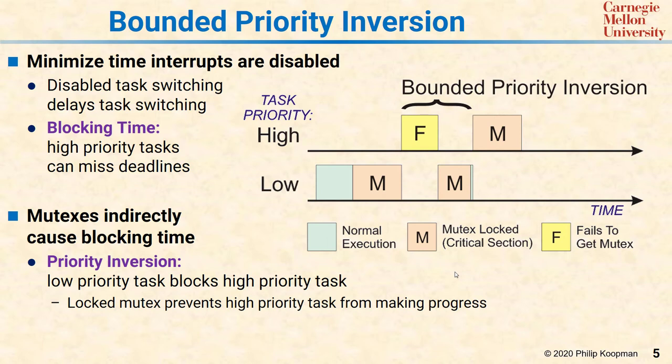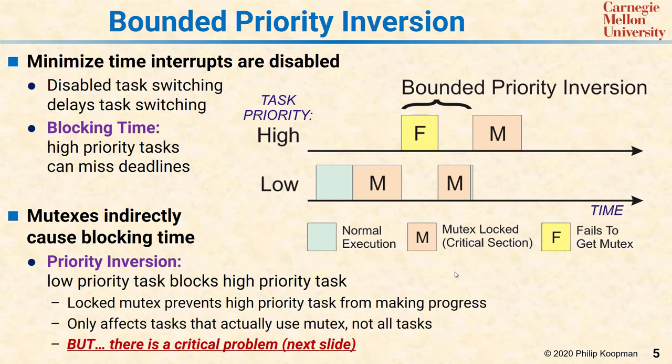As long as you can guarantee the maximum length of time the low priority task needs the mutex, you know the high priority task will never be delayed more than that. This particular type of priority inversion only involves tasks that actually use the mutex. So there might be a medium priority task — as long as it doesn't touch the mutex, it's going to run just fine with its established priority.